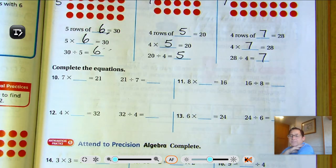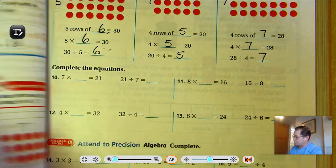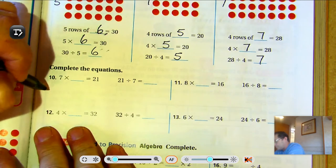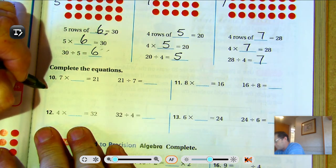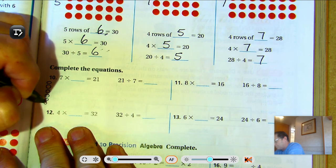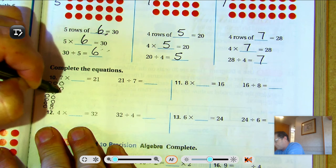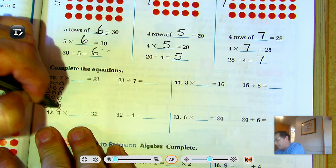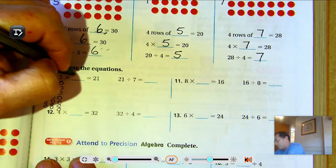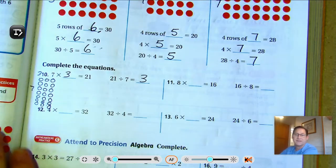So seven times what is 21? Counting: 7, 14, 21, three. Seven rows of three is 21. So 21 divided by seven is three.